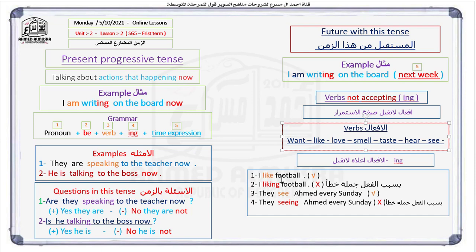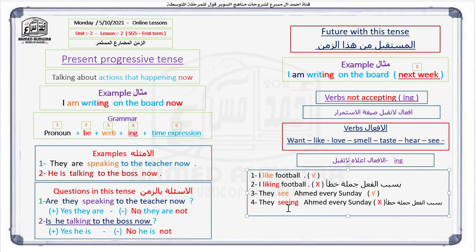Look at these sentences: 'I like football' — this is correct. 'I liking football' — this is wrong. 'They see Ahmed every Sunday' — this is a true sentence. 'They seeing Ahmed every Sunday' — this is wrong. That is the end of our lesson. I need you to copy this in your sheet. I will see you in the real class, maybe tomorrow or the next day. Have a great time and see you soon. Thank you so much. Bye.